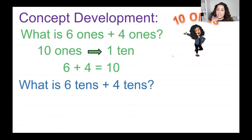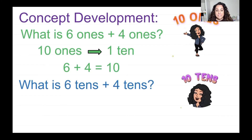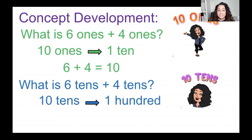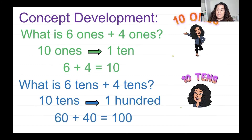Now let's change our ones to tens. What is six tens plus four tens? If I have six tens plus four tens, it equals 10 tens. And 10 tens is equal to 100, which means that 60 plus 40 is equal to 100.